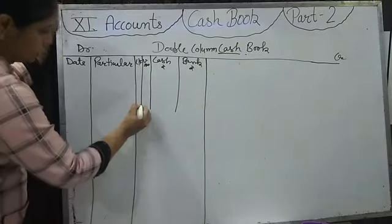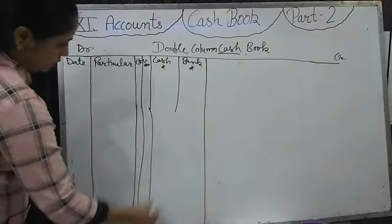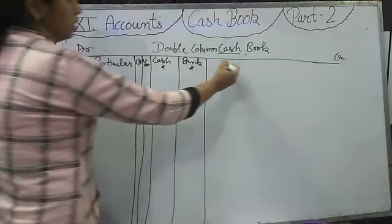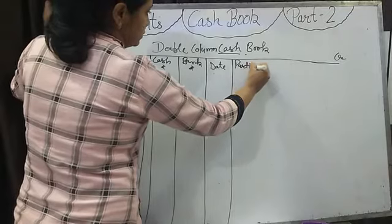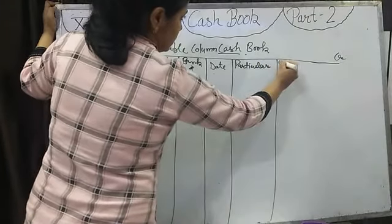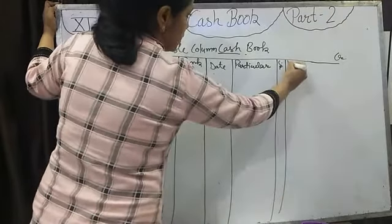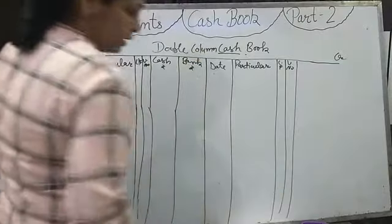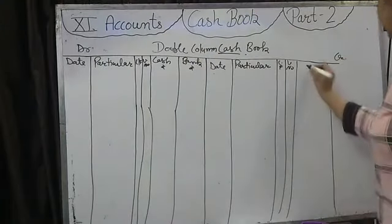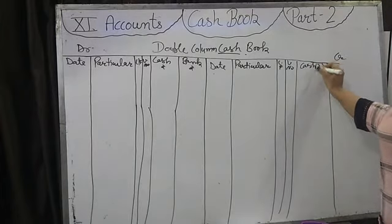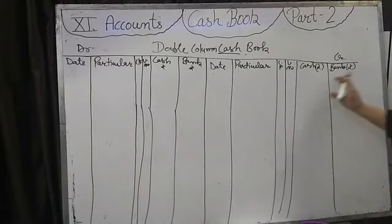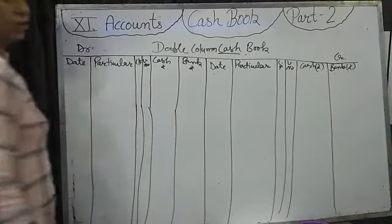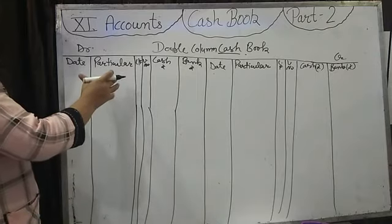The format of double column cash book — same columns: Date, Particular, Ledger Folio, Voucher Number — but the amount column is divided into two: Cash and Bank. Same columns are on the credit side. In the cash and bank columns, we write the rupee amount — how much cash is involved and how much cheque amount is given or received.